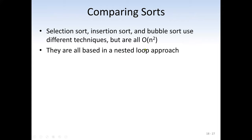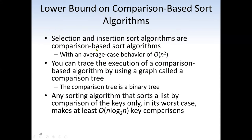Selection sort, insertion sort, and bubble sort use different techniques but they all have O(n²). Based on the techniques we saw, bubble sort has more comparisons than selection sort and insertion sort, and selection sort has more comparisons than insertion sort. Among the three, insertion sort is best, selection sort is in the middle, and bubble sort is the worst. Selection and insertion sort are comparison-based sorting algorithms with O(n²) Big O notation.